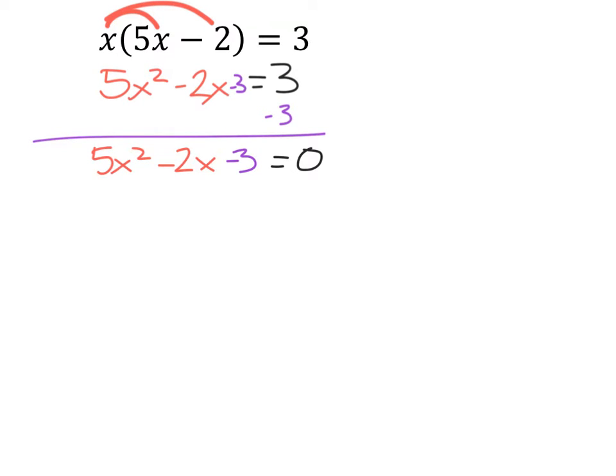5x² minus 2x minus 3 equals 0. So in order to factor this out, we're going to take, since this is in standard form, the a and c values and multiply those. So we really have 5 times negative 3, which is equal to negative 15. And then we need two factors of negative 15 that when